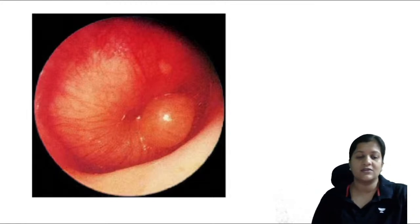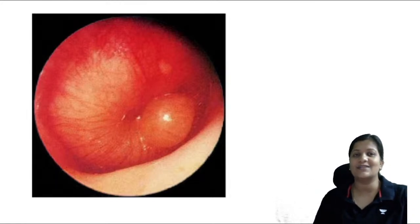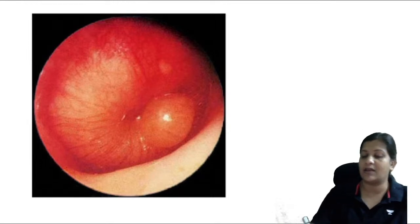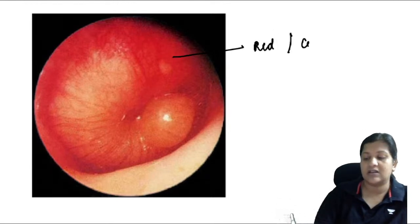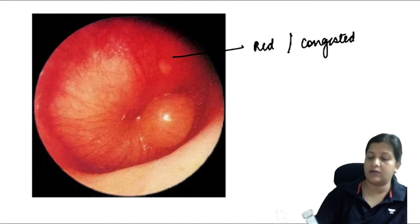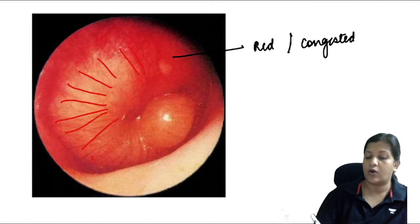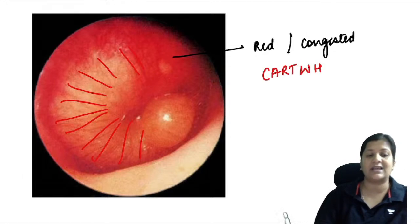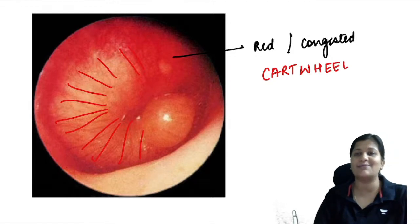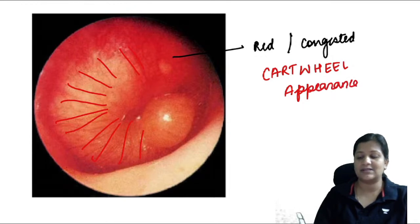Looking at this next image, the tympanic membrane is red and congested. You can see blood vessels radiating from the periphery to the center — this appearance is called cartwheel appearance, and it is extremely specific for one condition.